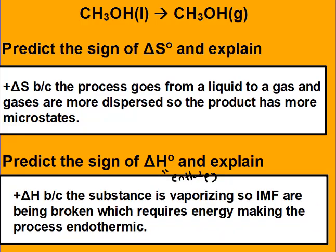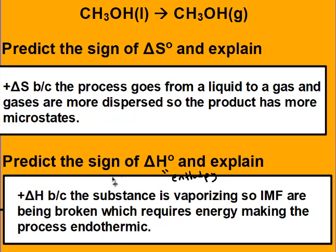Delta H is positive because the substance is vaporizing — going from a liquid to a gas. Intermolecular forces, or IMFs, have to be broken, which requires energy, making the process endothermic. If it was going from a gas to a liquid, it would condense, intermolecular forces would be formed, and that would be exothermic. In this case, our delta H and delta S are both positive.